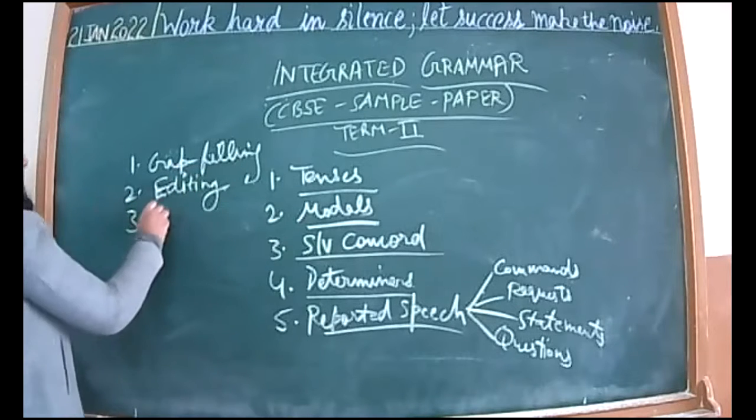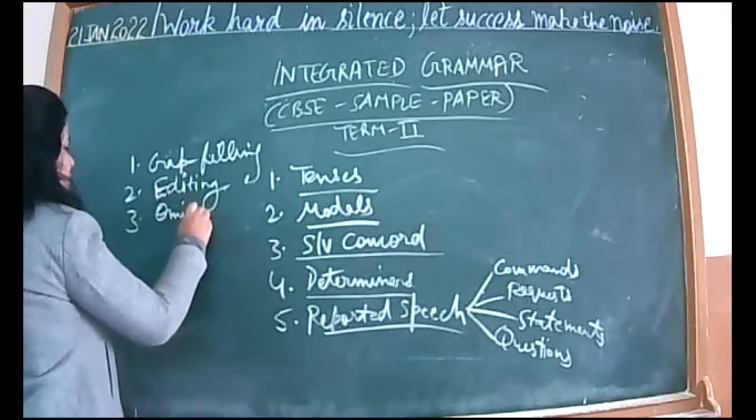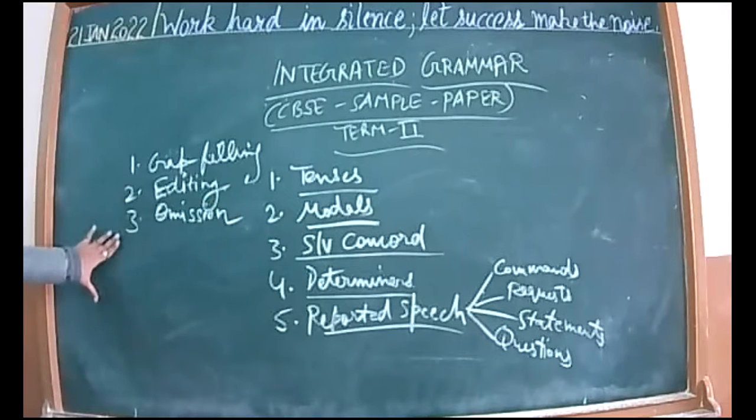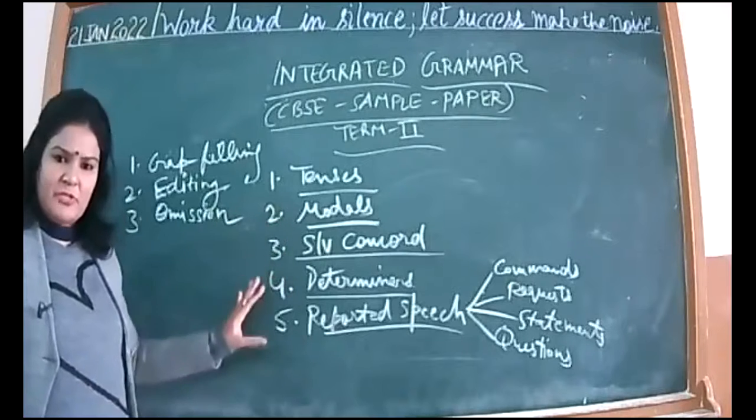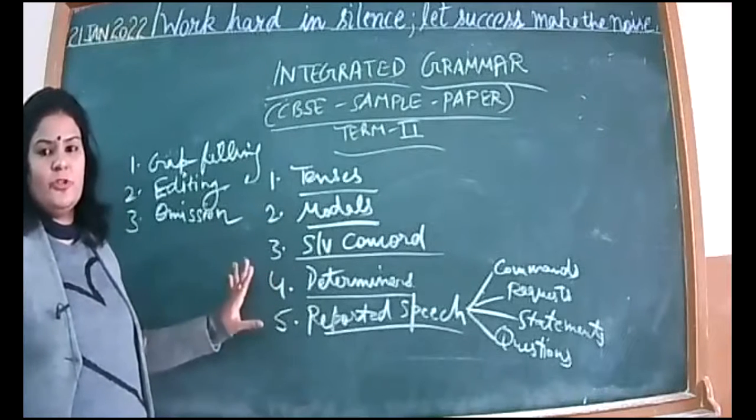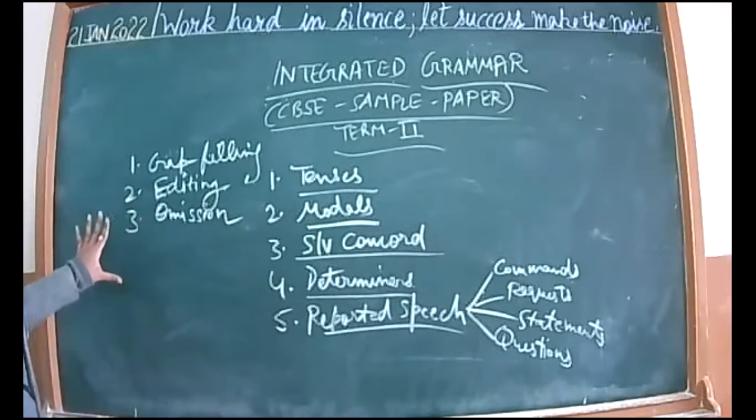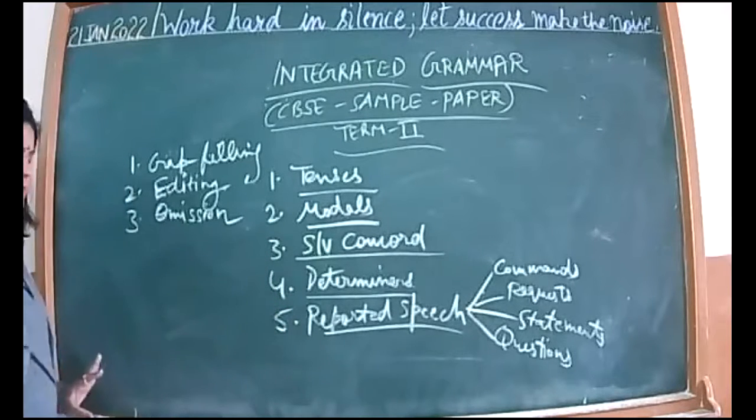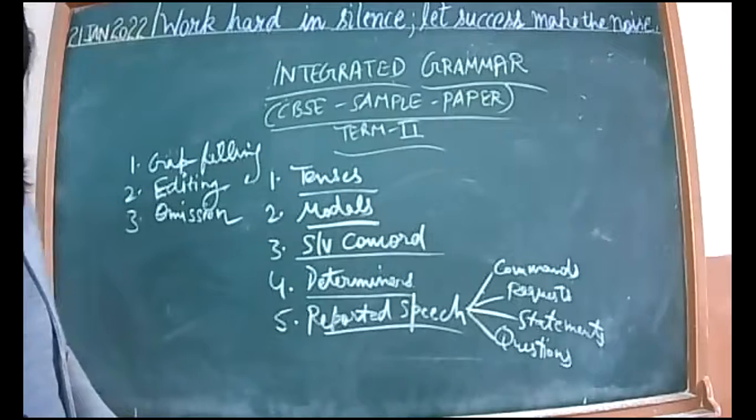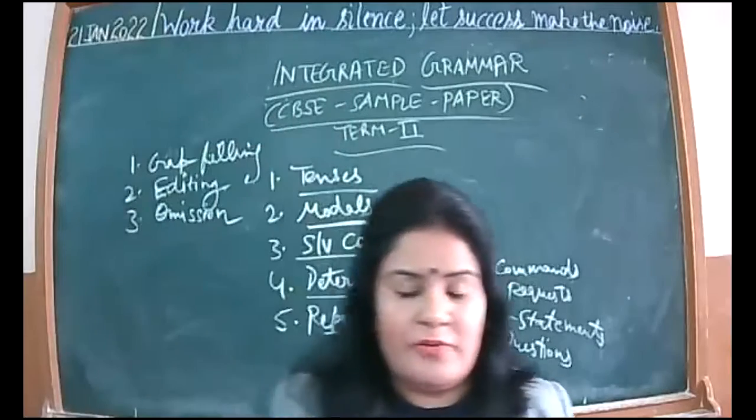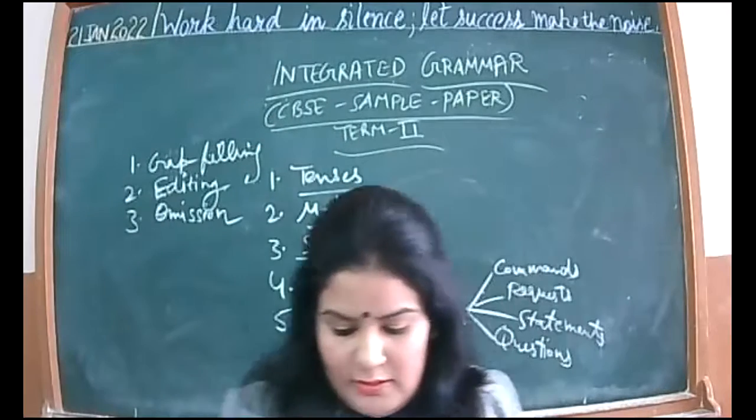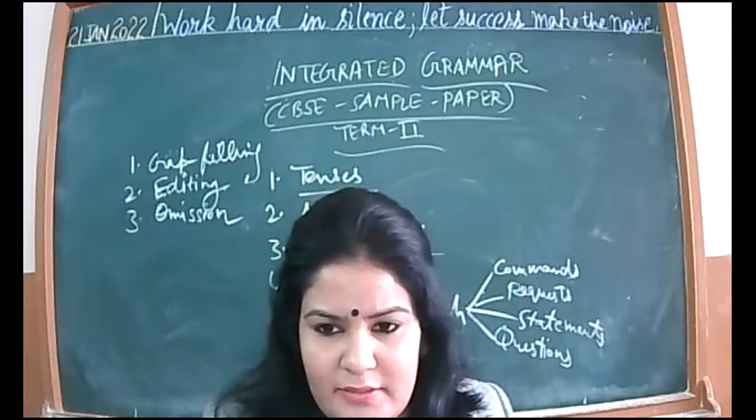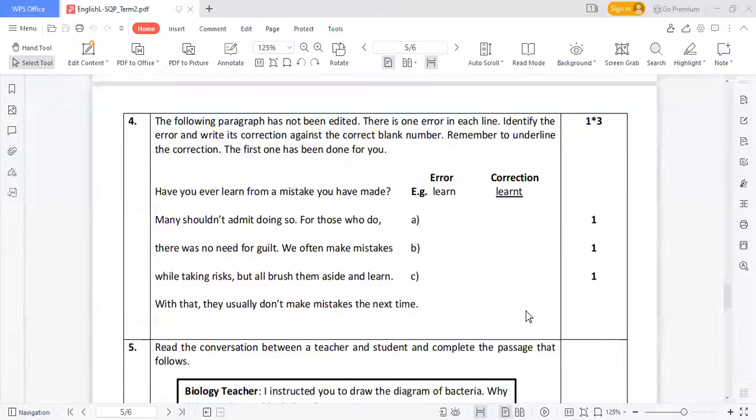What about tenses, modals, subject-verb agreement, and determiners? They will not come directly. Grammar can come in the form of gap filling, editing, or omission. It can be based on MCQs or without MCQs, both ways you have to prepare yourself. This is the basic structure we are going to get in term two grammar.